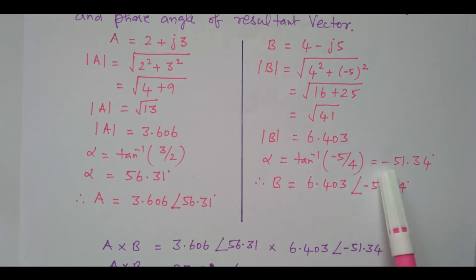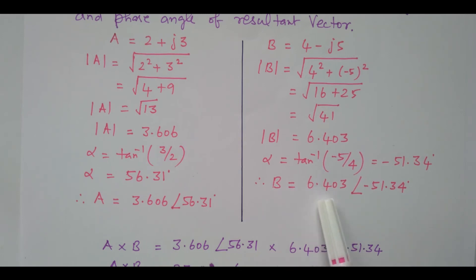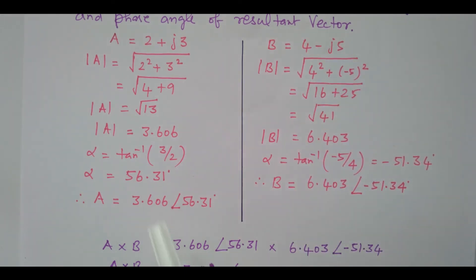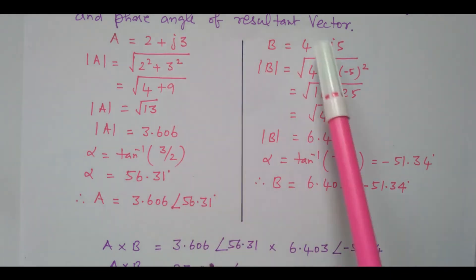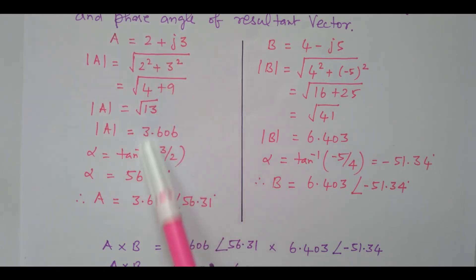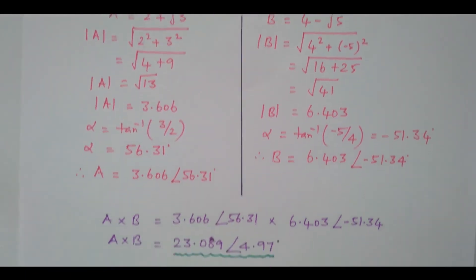Due to the negative sign, we got a negative angle. So that can be represented as magnitude 6.403 angle minus 51.34. So this rectangular form of B is now converted into polar form. These two vectors can be multiplied easily in polar form, and that multiplication will be easier.